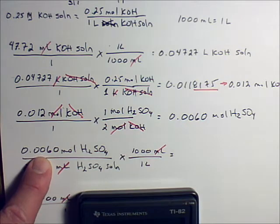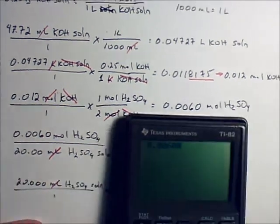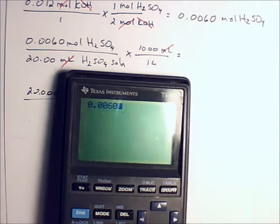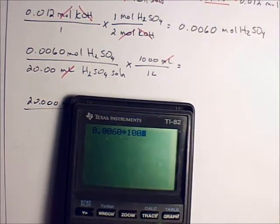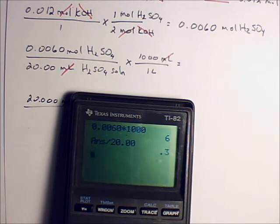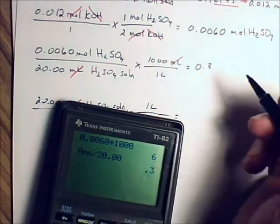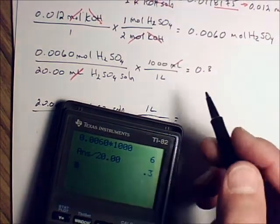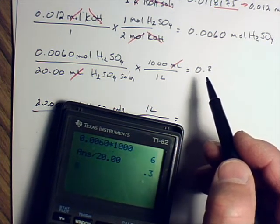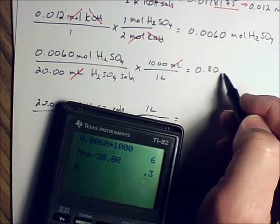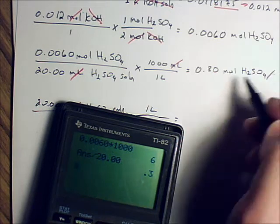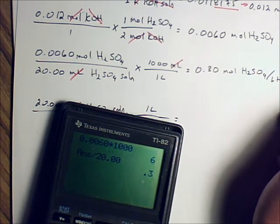So, I'm going to take the top two numbers and multiply them together. 0.0060. Let's move that up so you can kind of see what I'm doing here on the calculator. 0.0060 times 1,000. Hit enter. And I'm going to divide by that 20. And I get 0.3. But how many significant digits do I need? Two digits.